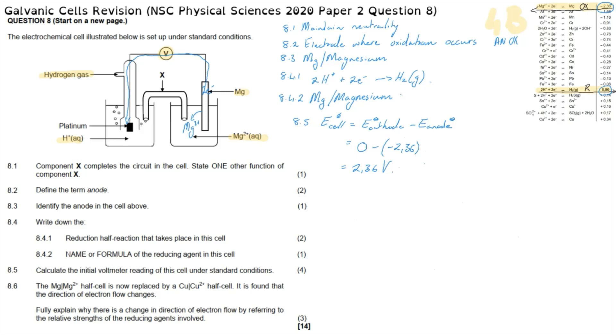It is important to note that this is a useful way to check your answer: any spontaneous galvanic cell will yield a positive cell potential. Our answer of 2.36 V is positive, confirming the cell is spontaneous.